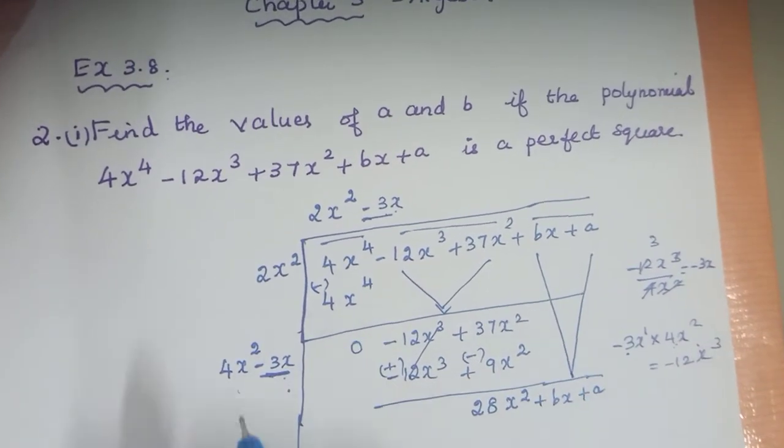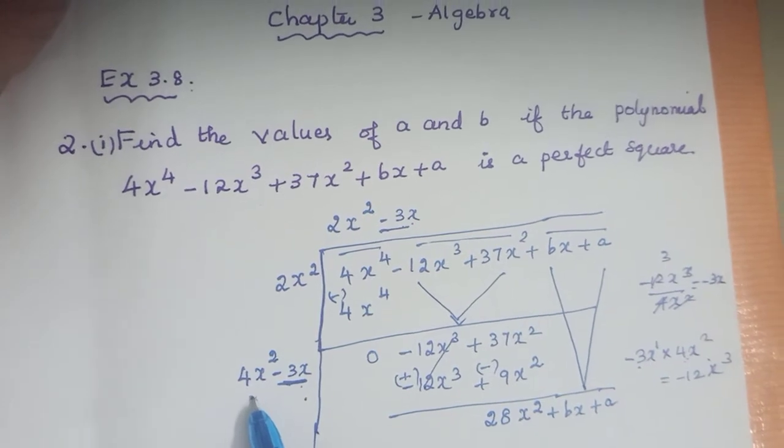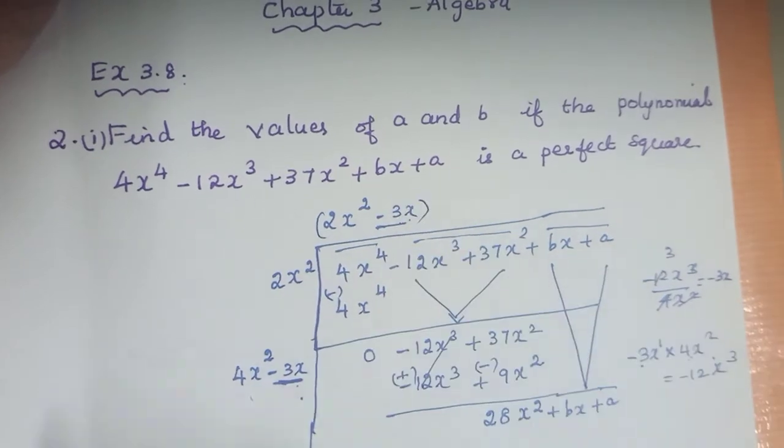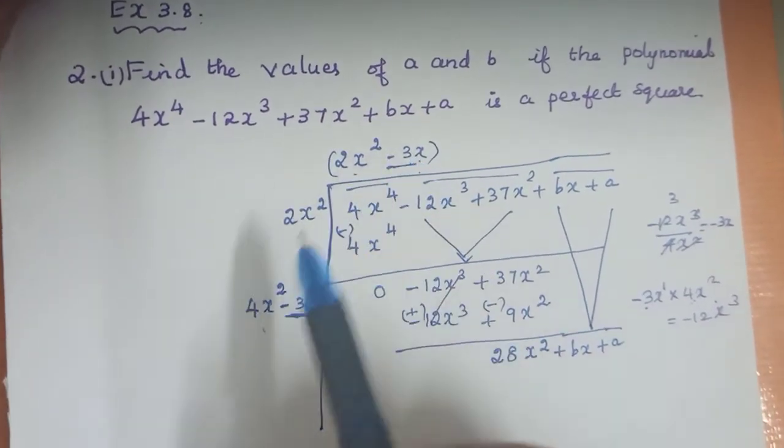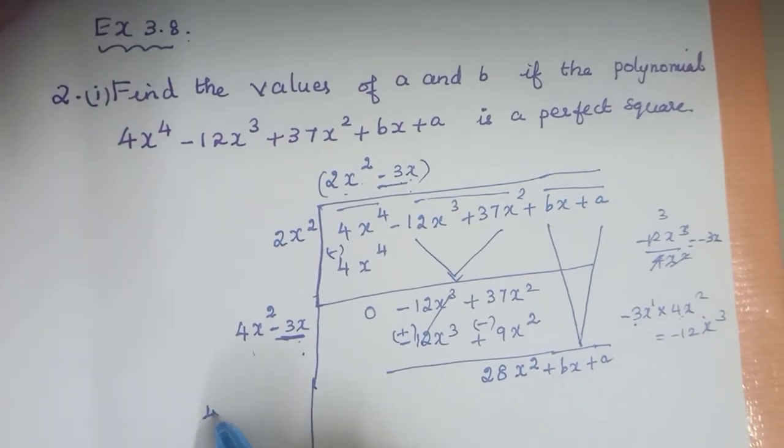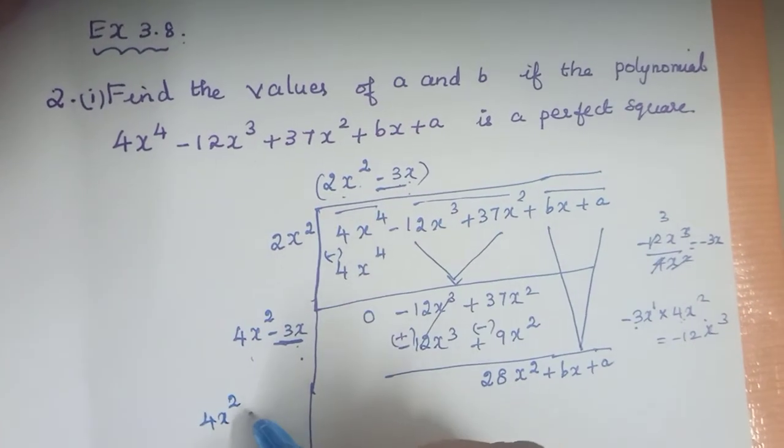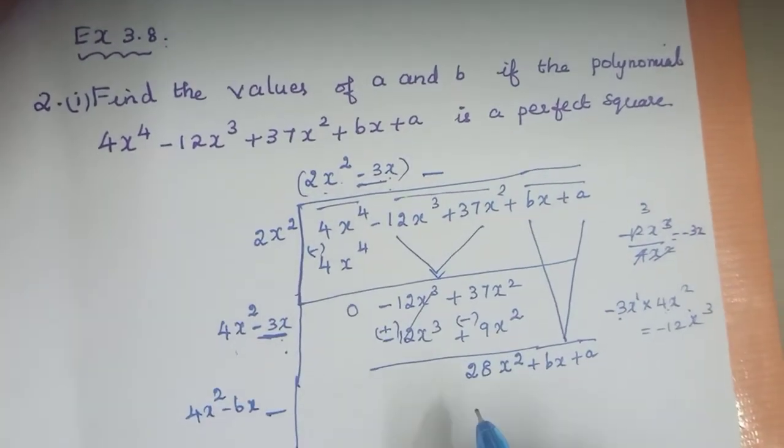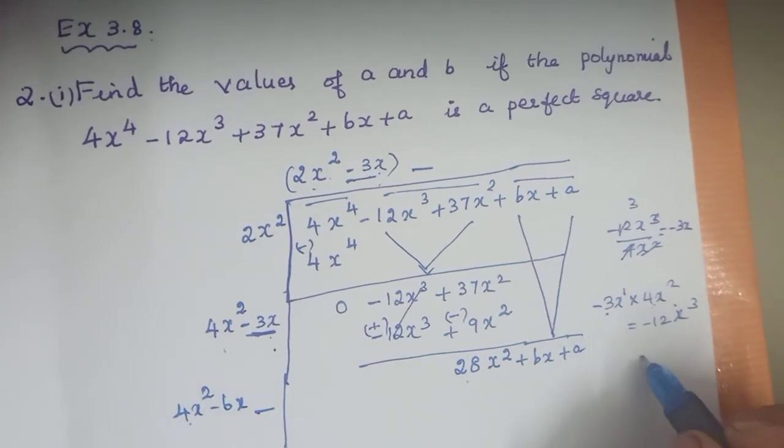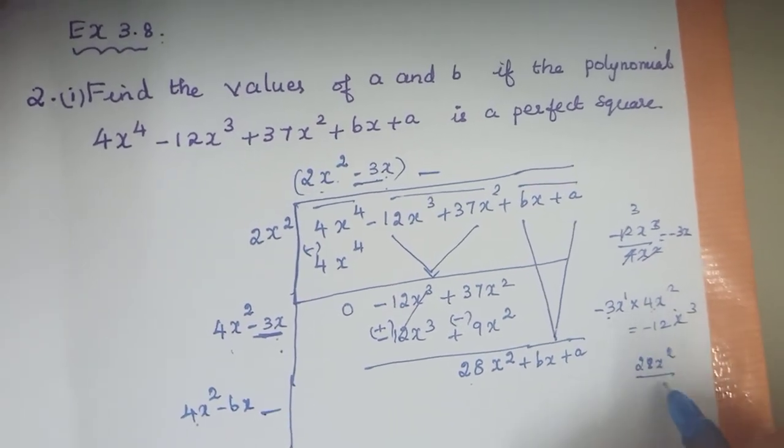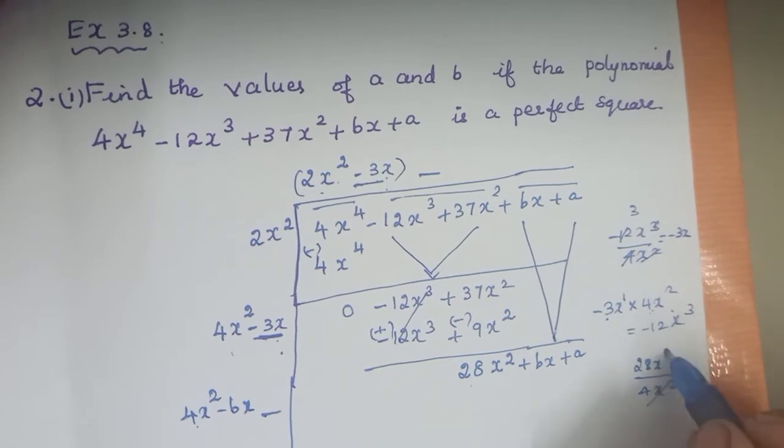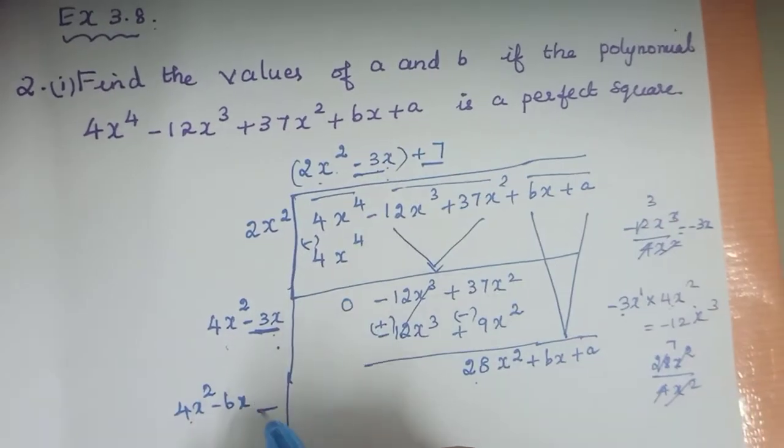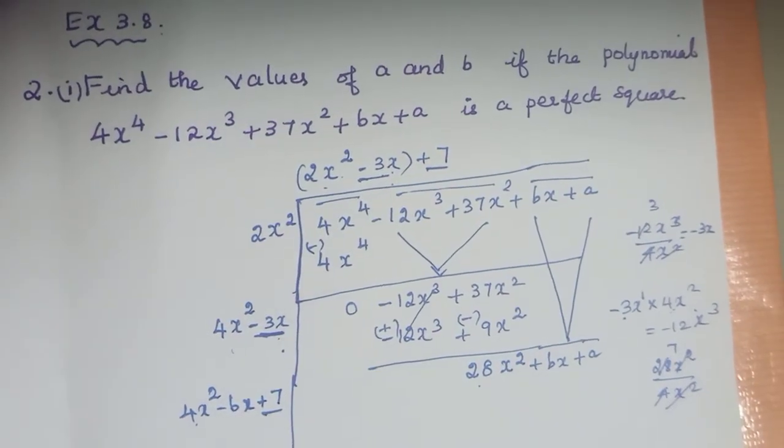What you have to do? First, 2 times the quotient: 2x square times 2 is 4x square. Minus 3x times 2 is minus 6x. Now divide the first term: 28x square divided by 4x square. x square cancels, you get plus 7. So plus 7 is the next term in the quotient.